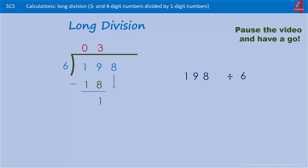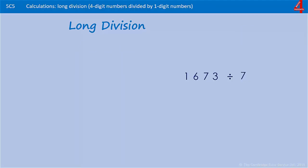Now we bring down the next digit, which is eight, and now we have 18. How many times does six go into 18? It goes in three times, and three times six is 18, and if we take that away we're now left with zero. 198 divided by six is 33.